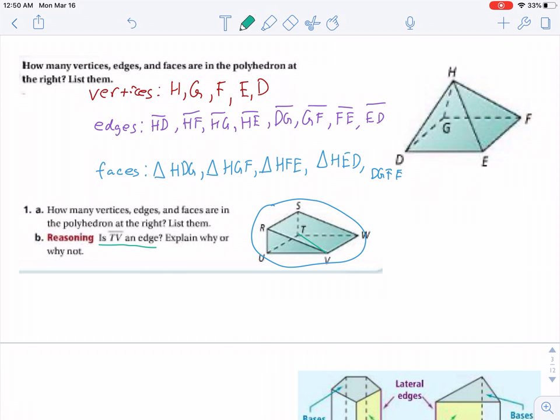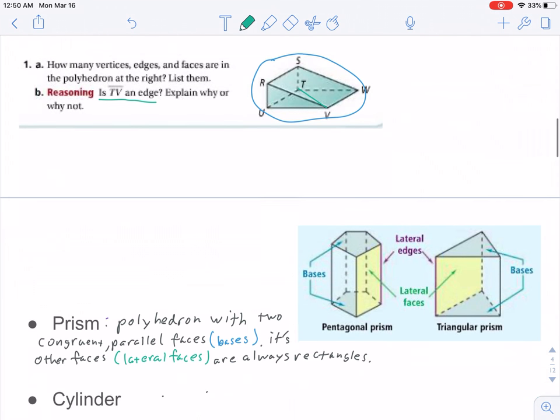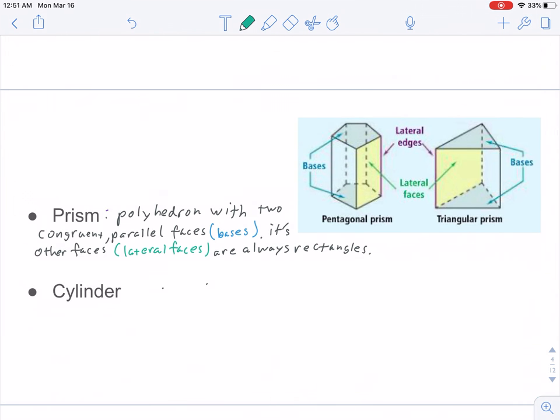But on to the meat of today's lesson: prisms. A prism is a polyhedron with two congruent parallel faces. Those are its bases. Its other faces, the lateral faces, are always rectangles. So, prisms are named for the shape that is their bases. A pentagonal prism has two pentagons, while a triangular prism has two triangles.